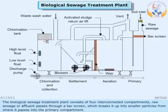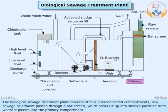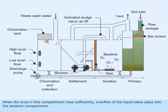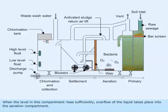The biological sewage treatment plant consists of four interconnected compartments. Raw sewage or effluent passes through a bar screen which breaks it up into smaller particles, from where it passes into the primary compartment. When the level in this compartment rises sufficiently, overflow of the liquid takes place into the aeration compartment.